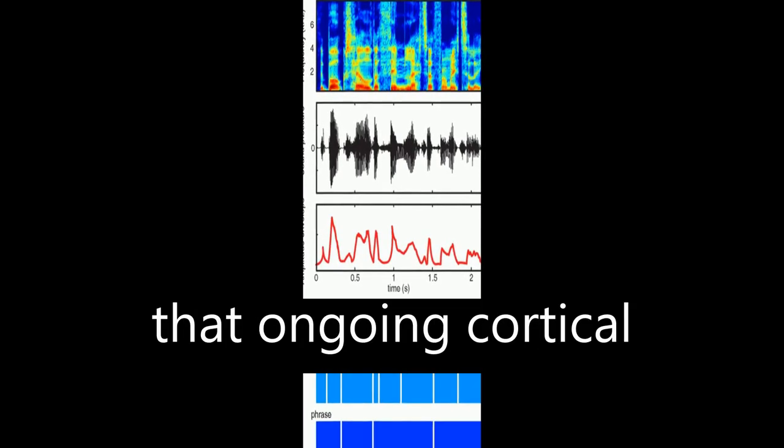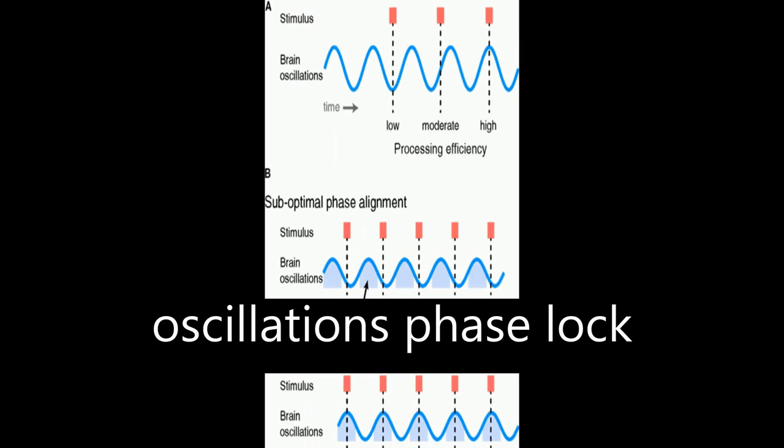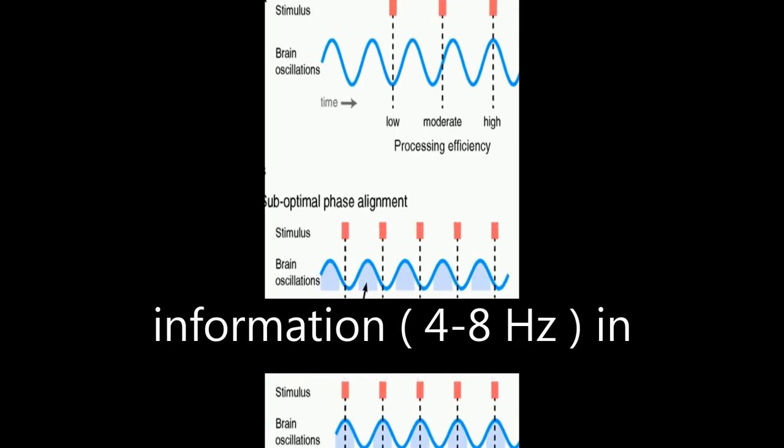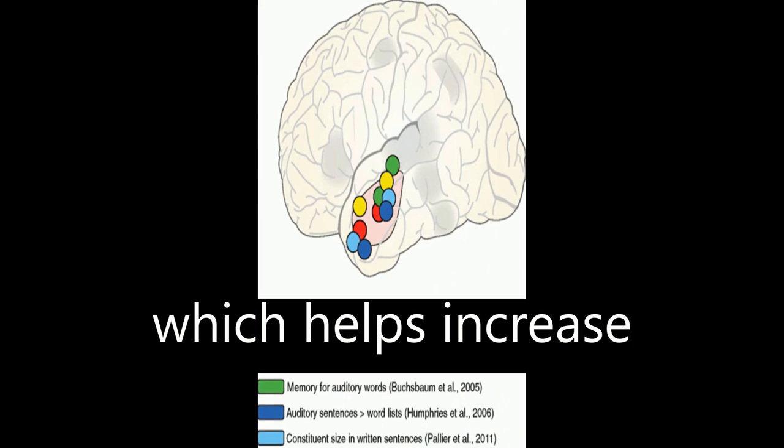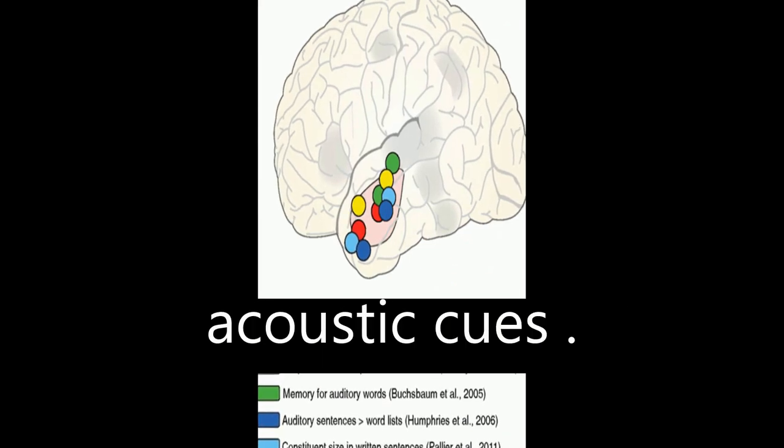Neuroimaging data shows that ongoing cortical oscillations phase lock to low-frequency information, 4 to 8 Hz, in the speech envelope, which helps increase sensitivity to relevant acoustic cues.